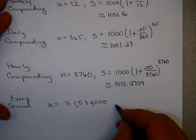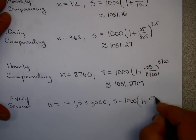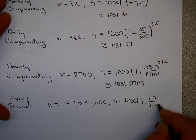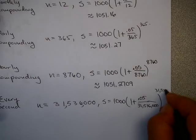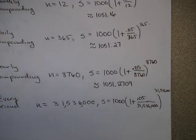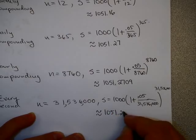Let's suppose you did this every single second. That would be $1,000 times (1 + 0.05/31,536,000) raised to 31,536,000. Let's take a moment to do that. I still get about $1,051.27.14.